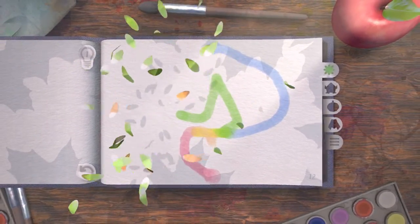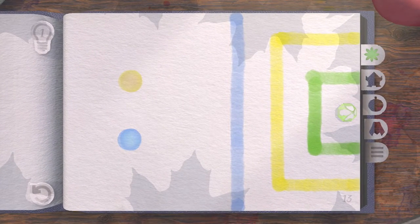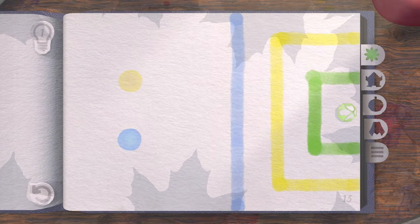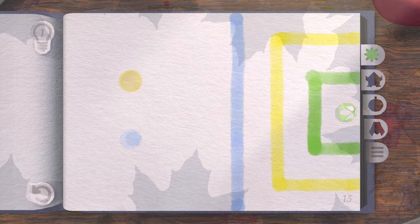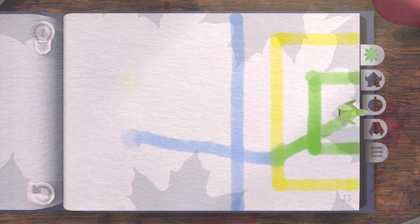And for each, like, ten stages, they change the paper foldy thingy. So before it was a butterfly. Now it's like a four-leaf clover, I guess. Okay. That was easy.